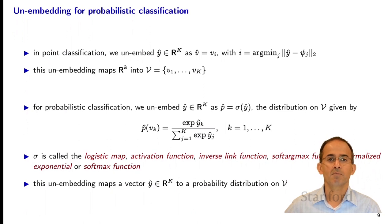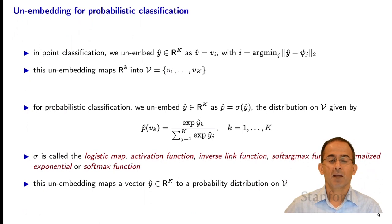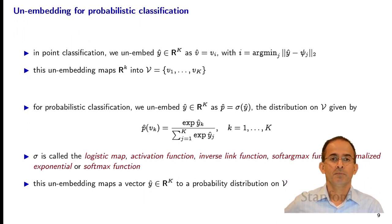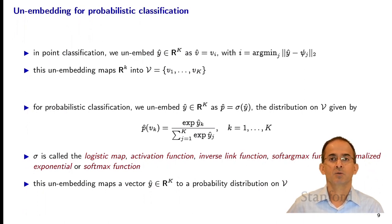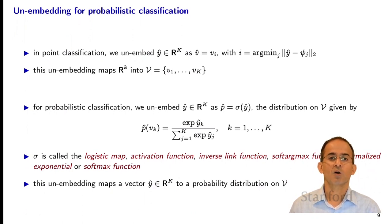In point classification we would un-embed a vector y-hat in R^K by picking the corresponding target v_i where i is the index of the representative psi_i closest to y-hat. That maps y-hat in R^K into the target set script V. But for probabilistic classification, we want to un-embed and map y-hat into a probability distribution on the target set script V. There's a common way of doing this called the logistic map or soft-argmax function.